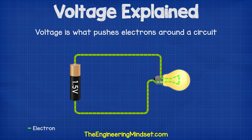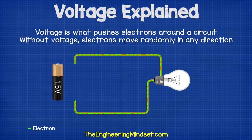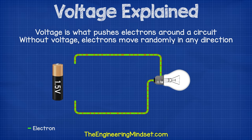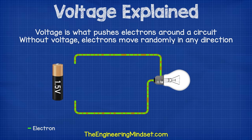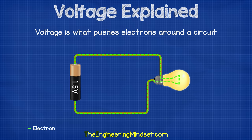In our last video, we learned that electricity is the flow of free electrons between atoms. Voltage is what pushes the free electrons around a circuit. Without voltage, the free electrons will move around between atoms, but they move around randomly, so they aren't much use to us. It's only when we apply a voltage to a circuit that the free electrons will all move in the same direction, causing current.